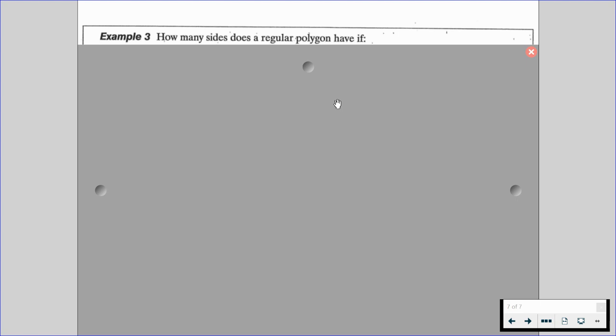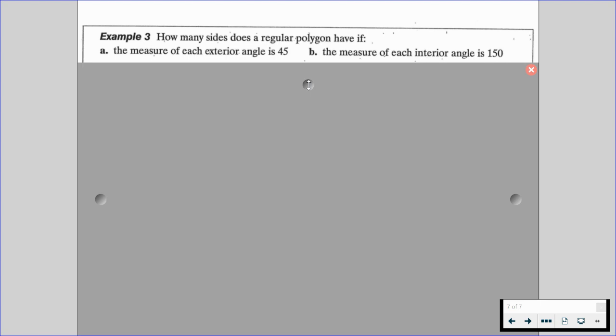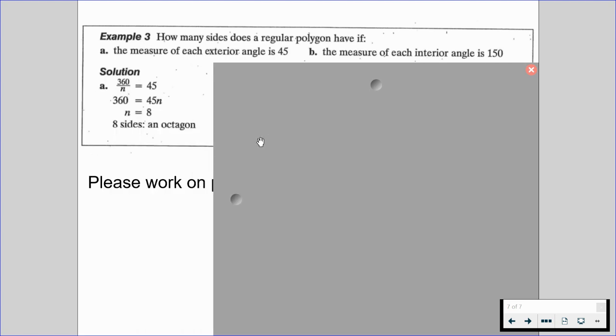We're going to be asked how many sides does a regular polygon have if there's going to be some values. So we want to see how many sides does a regular polygon have if the measure of each exterior angle is 45 and the measure of each interior angle is 150. So in order for us to find the number of sides using the exterior angle being 45, we are going to use 360 divided by n, the number of sides, is equal to 45. Because we know that the sum is always 360, and we divide that by the number of sides to get us each angle. But now we're going to substitute in our known value, which is we know each angle is 45. So we multiply both sides by n, and we find that it's going to be an octagon, 8 sides to it.